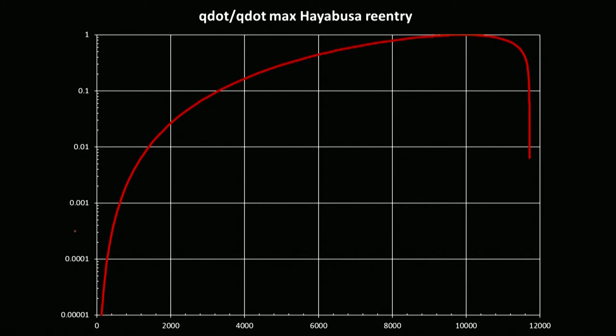As an example, we can look at the Hayabusa re-entry profile, the Japanese sample return mission that came back in 2010. I've normalized the heat transfer here by the maximum value, which for this case turned out to be at about 10 kilometers per second. You can see it's within an order of magnitude of that for quite a long part of the flight vehicle, from here to here. That whole part of the flight range is very high levels of heating rate. That's an indication that this is going to be a very big problem to deal with for re-entry craft.